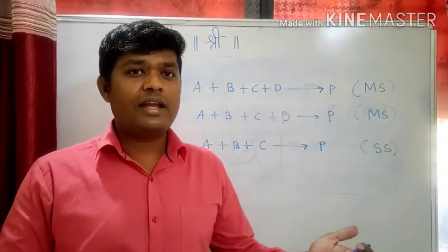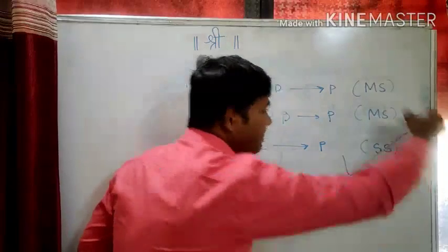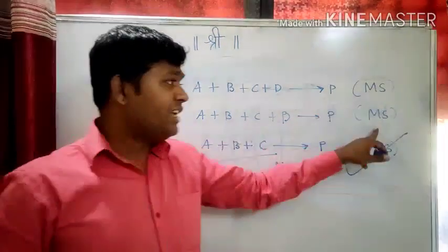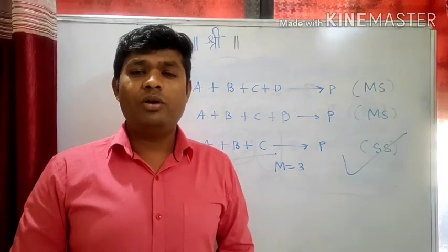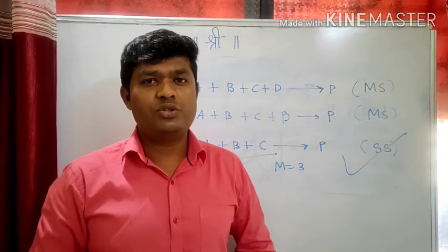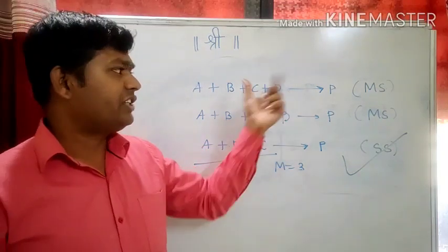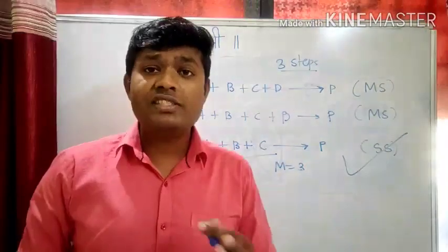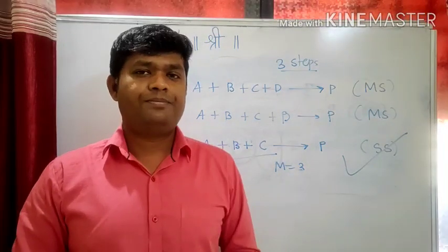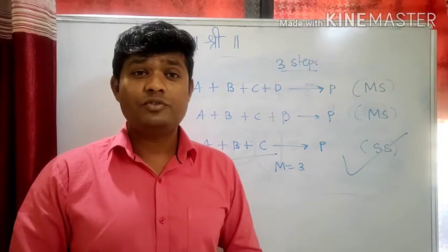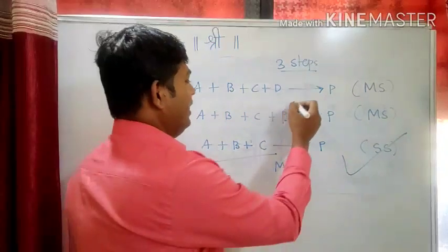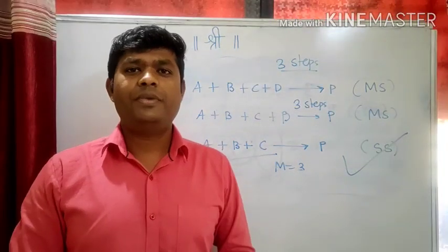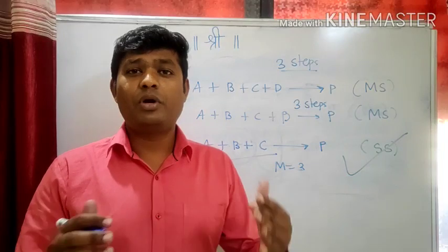For the single step reaction seven, you can directly predict the molecularity by looking at the number of molecules. Reaction seven is single step — how many molecules are involved? Three. So molecularity of reaction seven will be three. But in case of the multi-step reactions you have to predict the slow step. Assume reaction five involves three steps and the slow step has two molecules — what will be the molecularity? Molecularity will be two. Now assume reaction six also takes place in three steps and the slow step has three molecules — what will be the molecularity? Molecularity will be three.